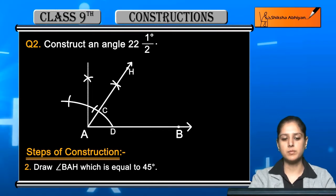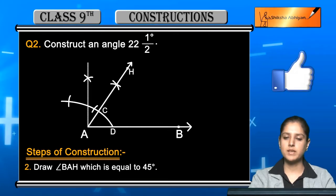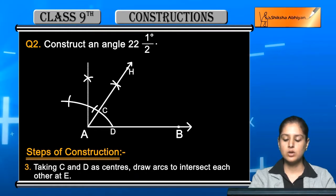You can see that when we constructed this, we have two points C and D. We will use these in the next step. Taking C and D as centers, draw arcs to intersect each other at E.